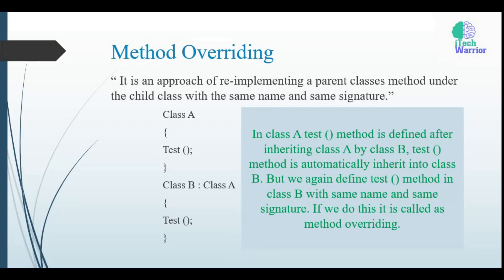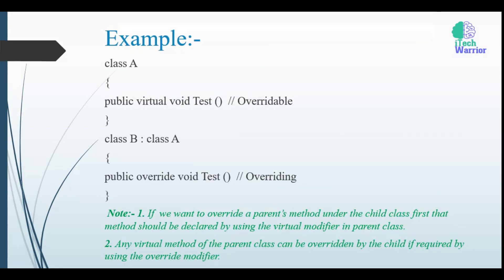Let's understand these statements. In class A, the test method is defined. After inheriting class A by class B, the test method is automatically inherited into class B. But we again define the test method in class B with the same name and same signature. If we do this, it is called method overriding.